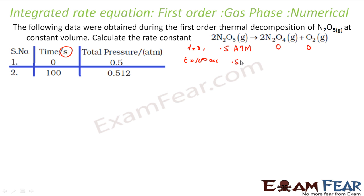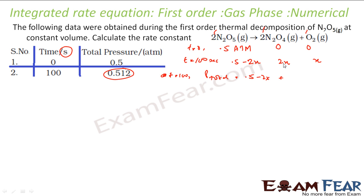At t = 100 seconds: if 2x moles of N₂O₅ are used, then 2x moles of NO₂ are created and x moles of oxygen are created. The stoichiometric coefficients are 2, 2, and 1 respectively. So the total pressure at t = 100 s is (0.5 − 2x) + 2x + x = 0.5 + x, and that value is given as 0.512 atm. So x = 0.012.